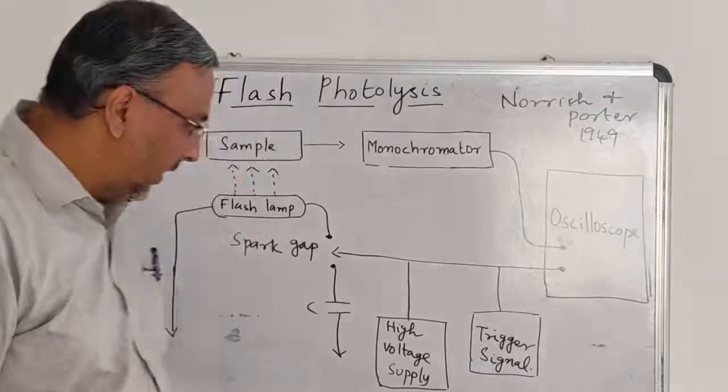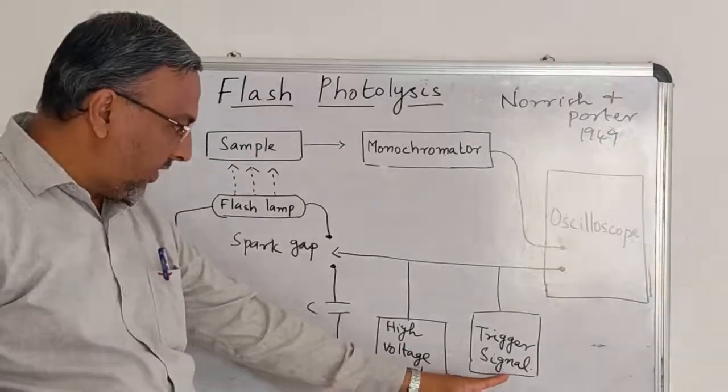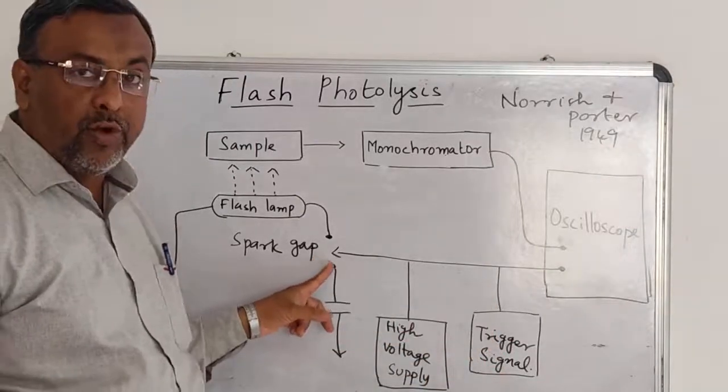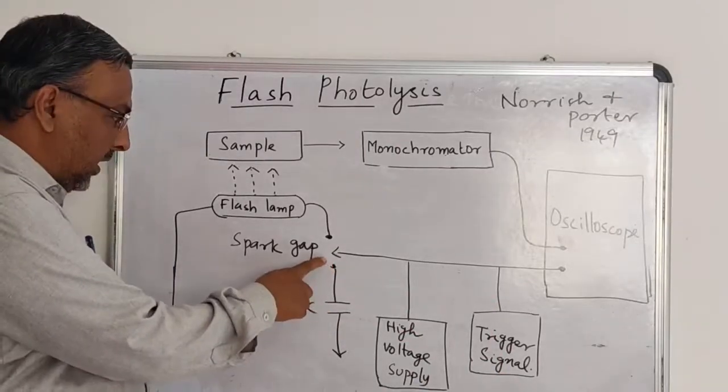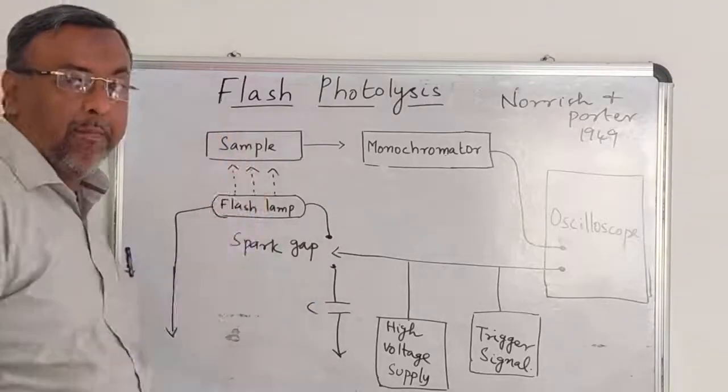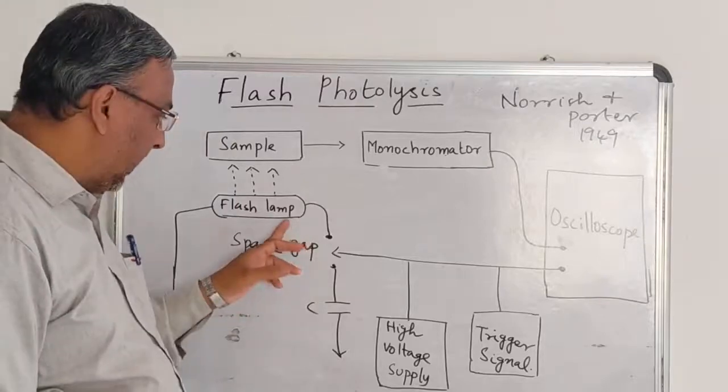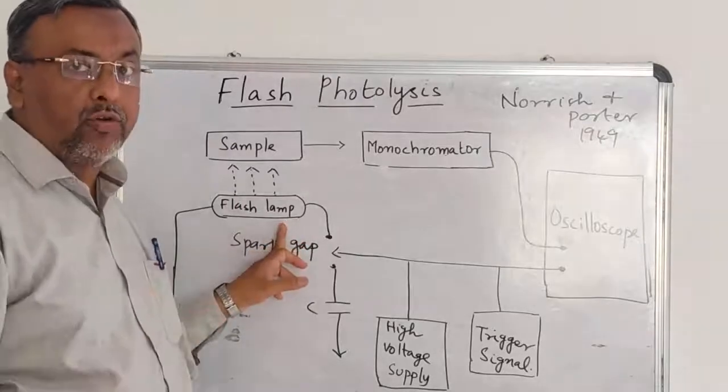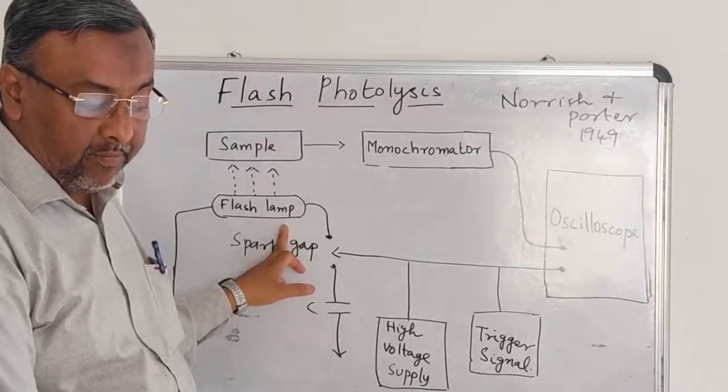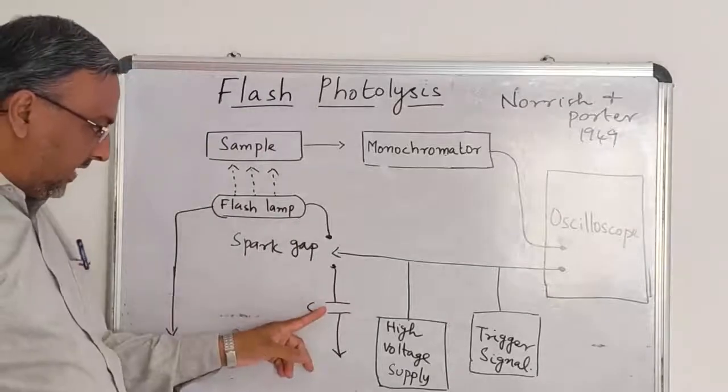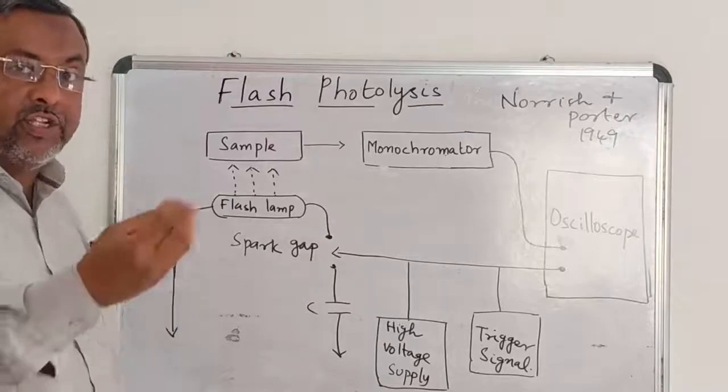By means of a trigger signal, a spark is produced in the spark gap which permits the rapid flow of a flash lamp, in which a very high amount of current is forced, a flash is formed. If that flash lamp is closed, the condenser discharges a very high amount of current within a very short time.